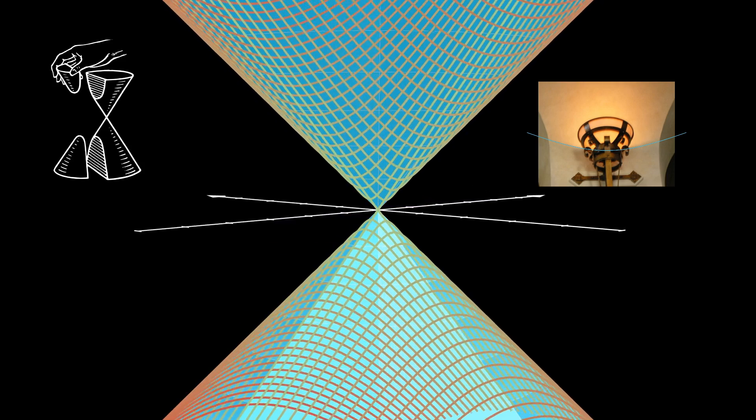Light spreading out in the shape of a cone, when cut by a wall or floor, will make a hyperbola.